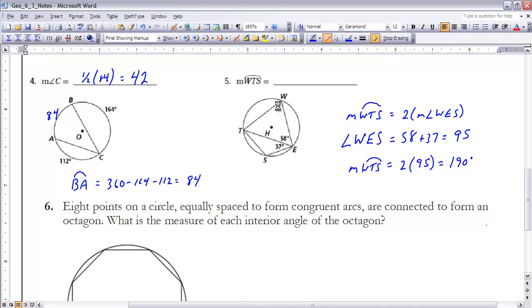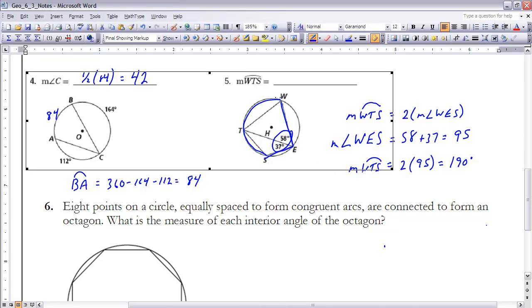As I look at number 5, I know that if I want to find the measure of arc WTS, arc WTS would be this arc right here, starting at W, going through T, and ending at S. That arc is the intercepted arc of this angle WES. Therefore, the measure of that arc has to be two times the measure of this angle, because the measure of the angle is half the measure of the arc. If I take these two values and add them together, that will give me the measure of angle WES.